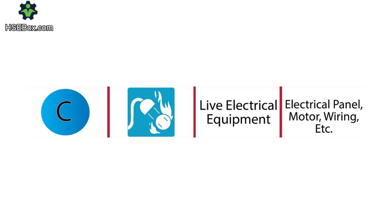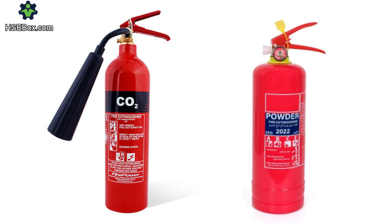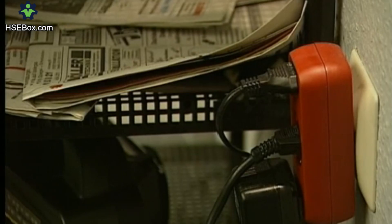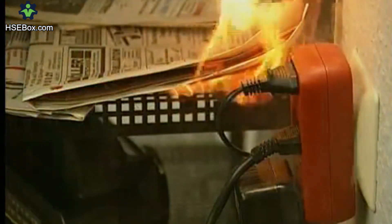Water conducts electricity and can lead to electrocution if sprayed on electrical fires. For class C fires, carbon dioxide or dry powder extinguishers are your best bet — these extinguishers eliminate oxygen without risking electric shock. Think about an electrical short circuit that sparks a fire in a server room; that's a typical class C fire scenario.